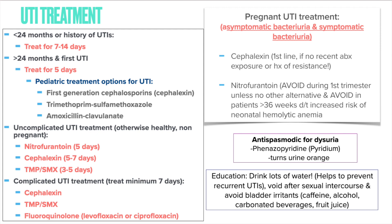For uncomplicated UTI — an otherwise healthy, non-pregnant female — treatment options are nitrofurantoin, cephalexin, or Bactrim. Complicated UTI treatment is a 7-day course and includes cephalexin, Bactrim, or fluoroquinolones such as levofloxacin or ciprofloxacin.